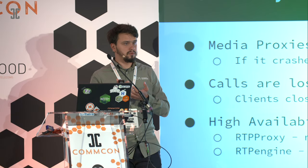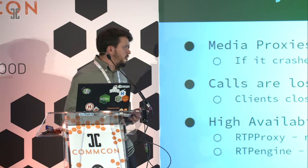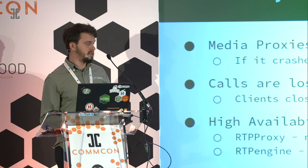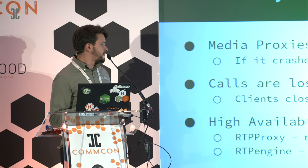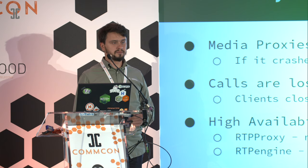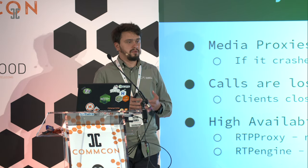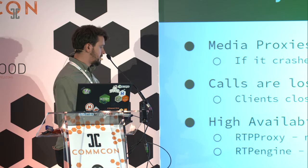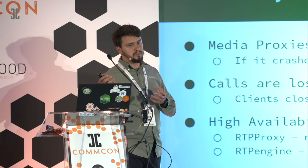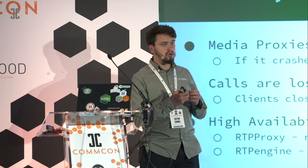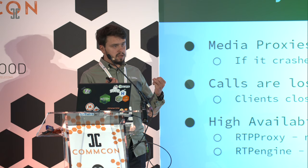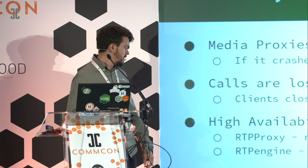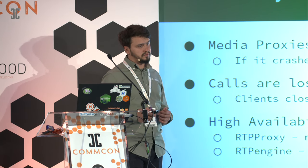We don't really want that to happen. In order to prevent this, we have to have some sort of high availability at the media level. Unfortunately, RTP proxy doesn't offer any solutions for that — if the RTP proxy goes down, the call will simply be lost. However, RTP engine offers the possibility to use Redis to exchange session information and have a hot backup on a different machine using a floating IP, so that if one goes down the other can handle the calls.